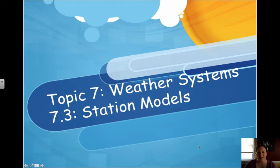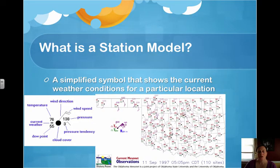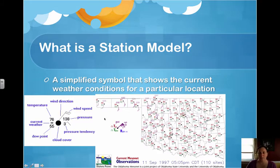Hello, welcome to our next section, 7.3 Station Models. Our goal for today is to create a station model. A station model, shown here in the picture, is a simplified symbol that shows the current weather conditions for a particular location.